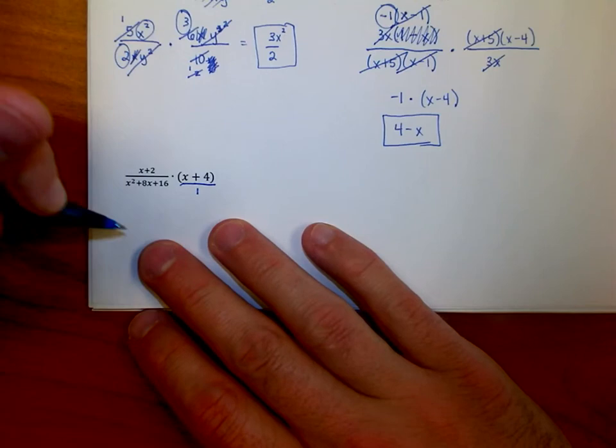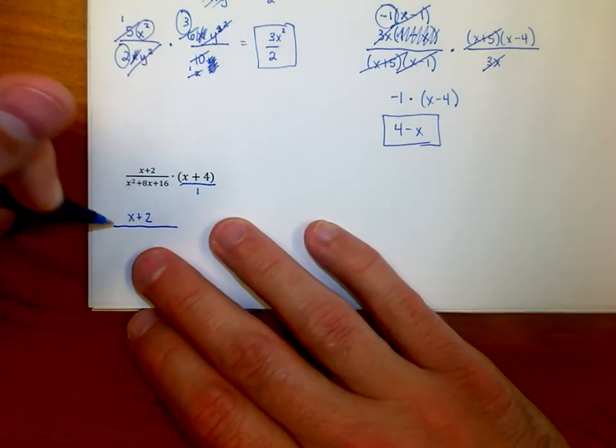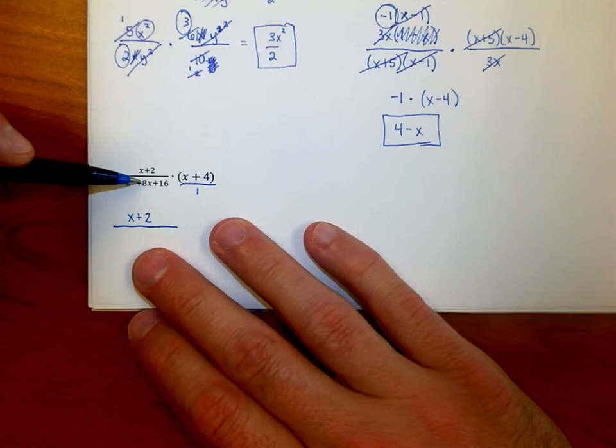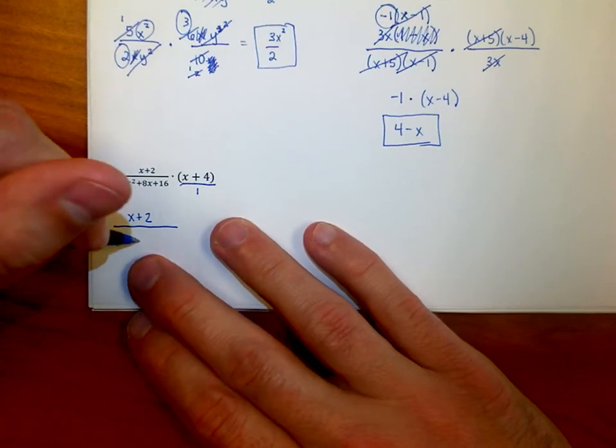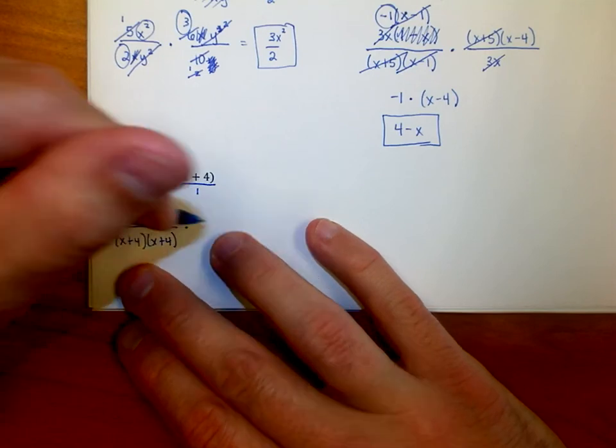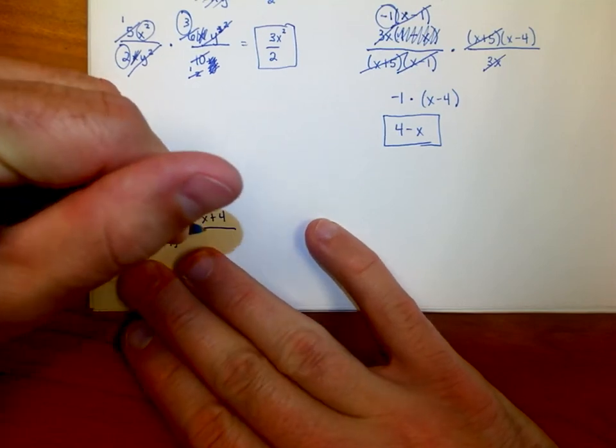The top one looks like it's factored already—it's just (x + 2), nothing to do there. The bottom is two numbers that add to 8, multiply to 16. I'm thinking 4 and 4, so that's really (x + 4)(x + 4). And then I'm going to multiply times (x + 4) over 1.